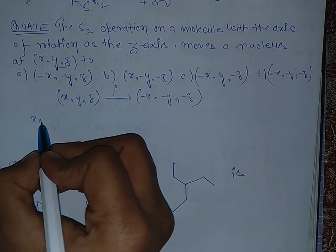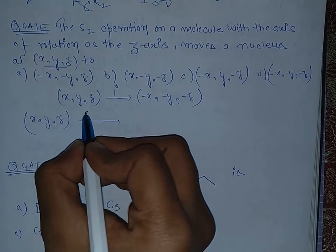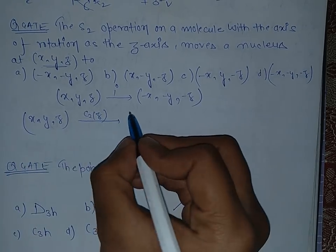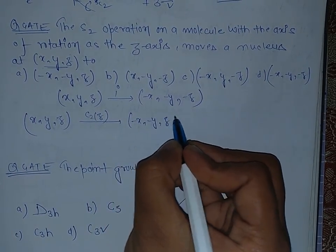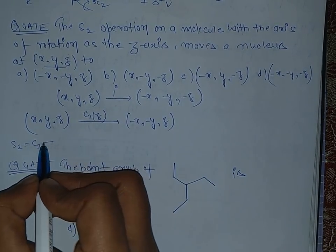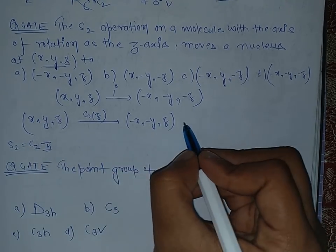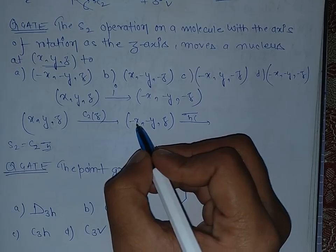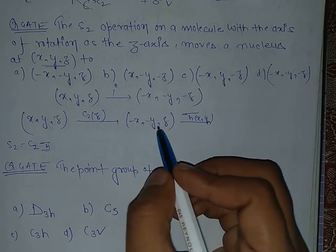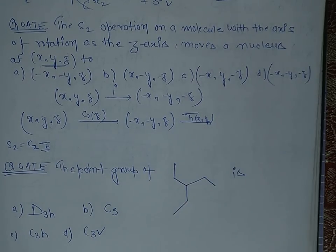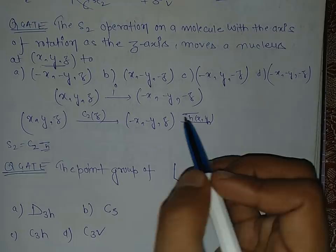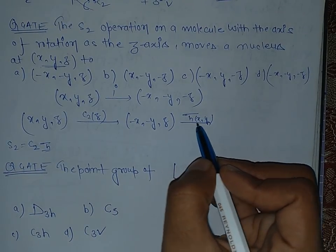So this is x, y, and z. If we pass a C2 axis along z direction, z will remain as it is and x and y become negative - minus x, minus y, and this is as it is. And S2 means first of all we have to pass C2 axis, then sigma h plane perpendicular to this axis. Now pass the sigma h plane from x and y.